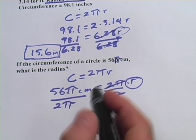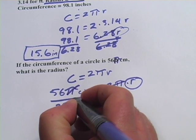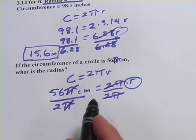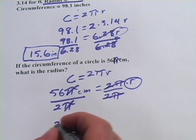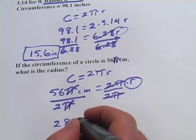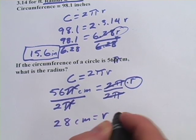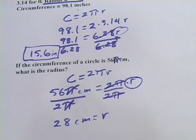On this side, well, the π's cancel, so those disappear. And then it's 56 divided by 2, well that's not too hard, that's 28 centimeters. So the radius equals 28 centimeters. So those are some problems using the formula for circumference and solving for the radius, or expressing the circumference in terms of pi.